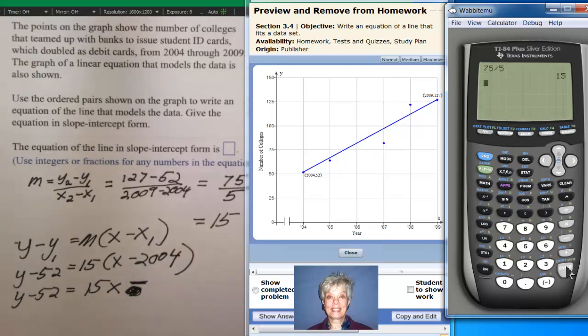15 times 2004. What's that? I don't know. Let's check it out. 15 times 2004. Enter. Is this number right here, 30060.